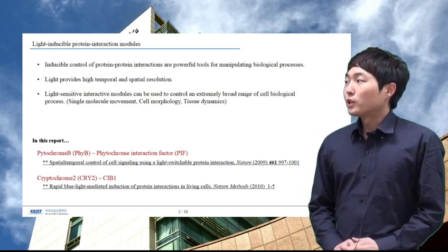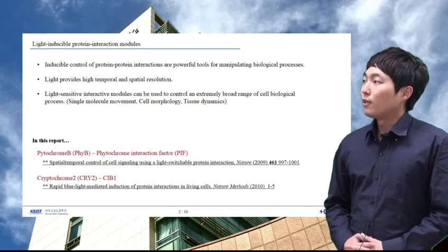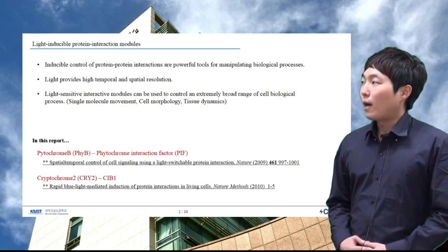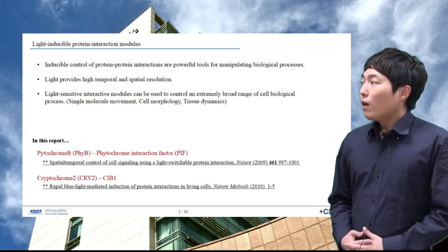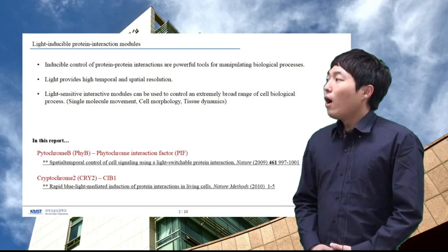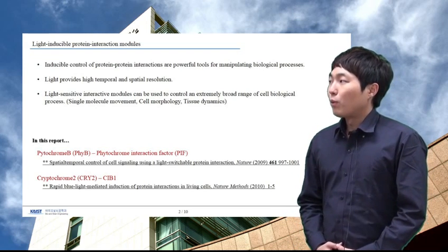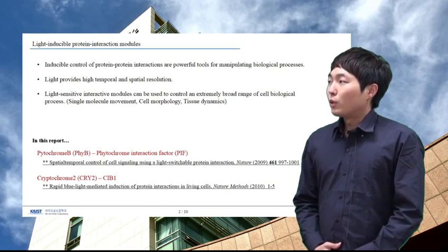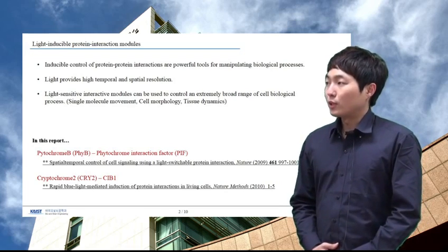In this presentation, I will introduce two representative light-mediated protein-protein interaction systems based on Arabidopsis thaliana that are completely suitable for mammalian cells. The main characters are Phytochrome-B, Phytochrome Interaction Factor PIF, and Cryptochrome-2 CIB-1 interaction.